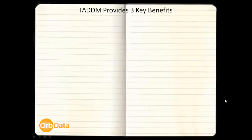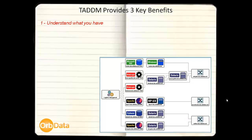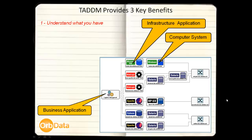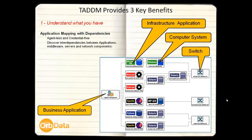TADM provides three key benefits. The first is being able to understand what you have already in your environment. The software lets you see the logical and physical dependencies among applications, middleware, servers, and network devices.